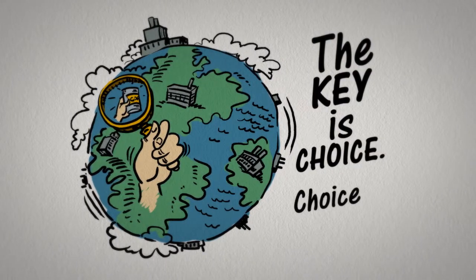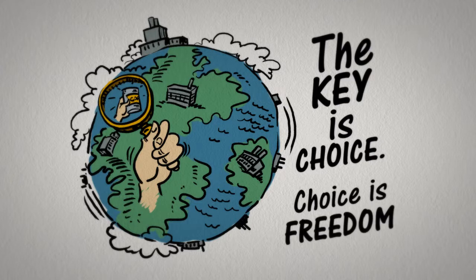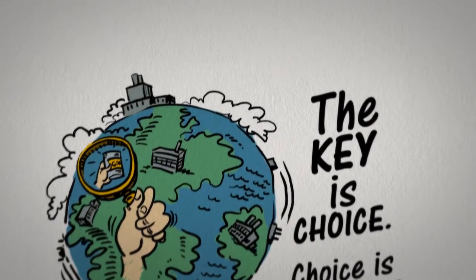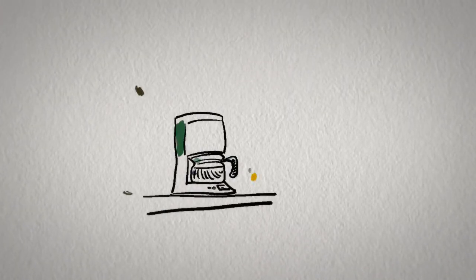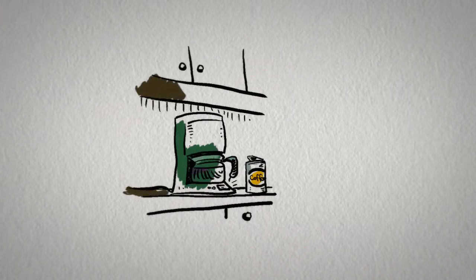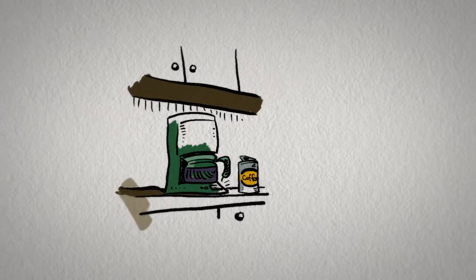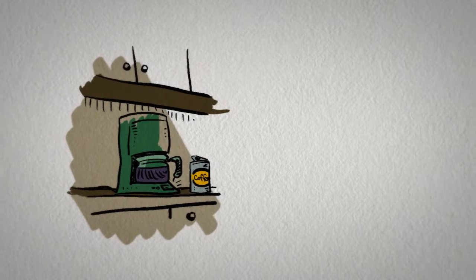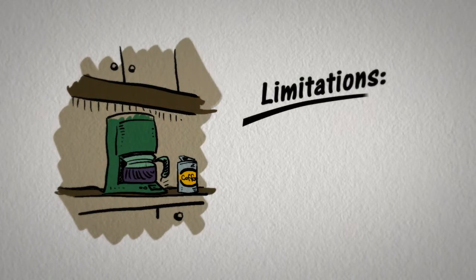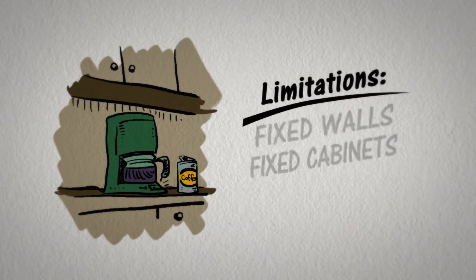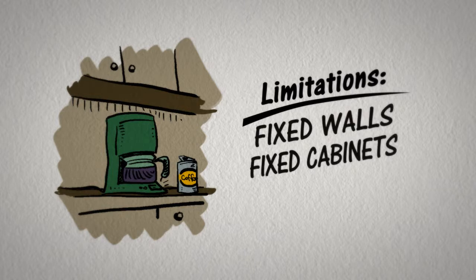Now back to structure. Every system has structures—its stable parameters. Your kitchen has stable parameters that allow you to make that cup of coffee, but at the same time, they impose limitations on the process. For example, the walls of your kitchen and the arrangement of your cabinets and counters—they're all fixed, and you don't change them because, well, the cost is too great.